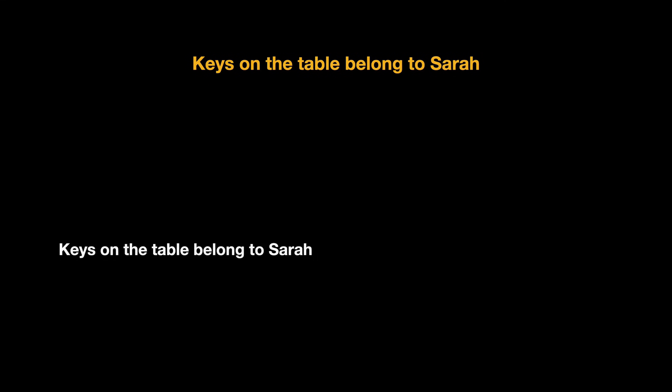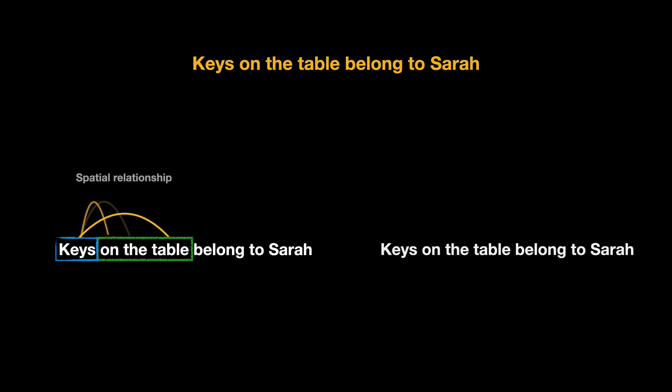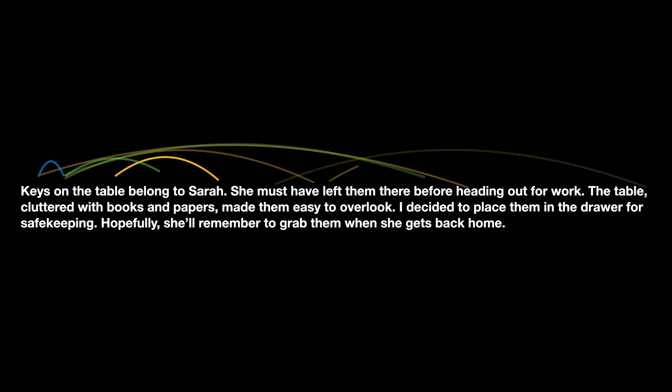For example, take the sentence 'the keys on the table belong to Sarah'. We need to capture at least two attention patterns for keys: one where there is a high dependency between keys and 'on the table', capturing the spatial relationship, and another capturing that the keys belong to Sarah, which is the possession relationship. A single head of attention cannot capture both of these dependencies. As the size of the sentence grows, capturing more and more dependencies for a single-headed attention becomes almost impossible.